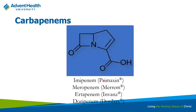And then next we have the carbapenems — there are four drugs in this category: imipenem, meropenem, ertapenem, and doripenem. Notice the naming conventions can be very helpful for memorization — if it has 'penem' in the name, you know it's a carbapenem. If it has 'cillin' in it, it's probably a penicillin. If it starts with 'ceph,' it's probably a cephalosporin.